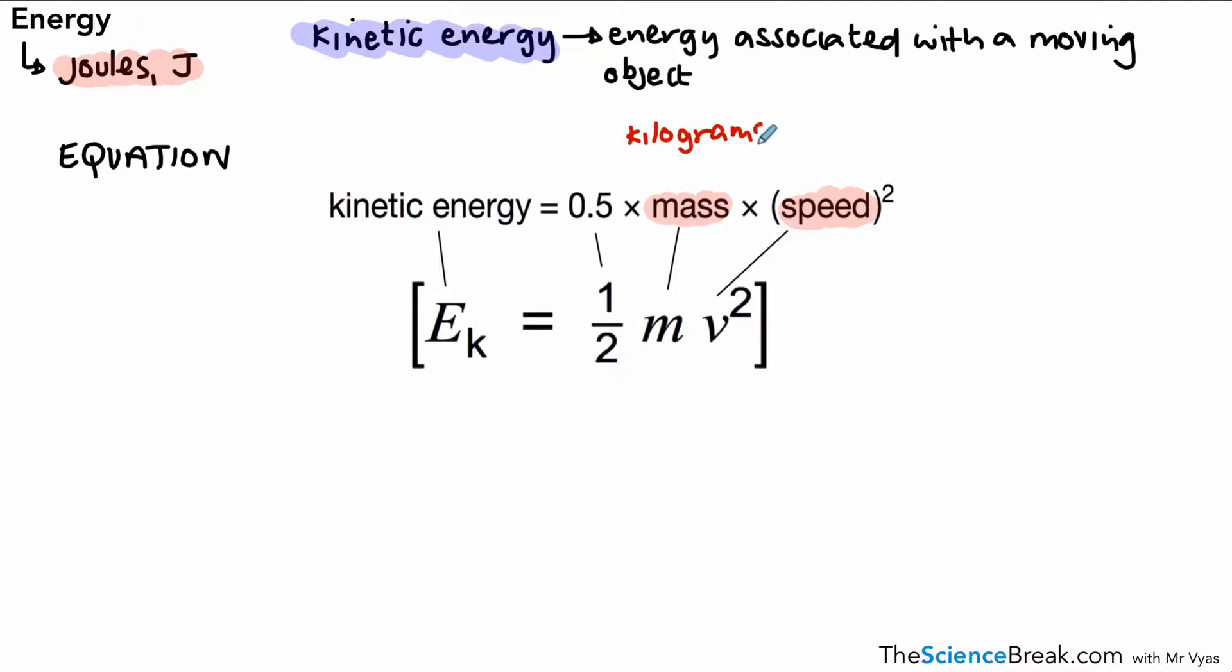So we need to know the units. Mass is measured in kilograms, and that's abbreviated with kg. Speed is measured in meters per second, and we write that as m/s. And kinetic energy, as we know, is measured in joules. Sometimes if you're dealing with larger amounts, we use kilojoules, abbreviated with kJ—kilo meaning a thousand.